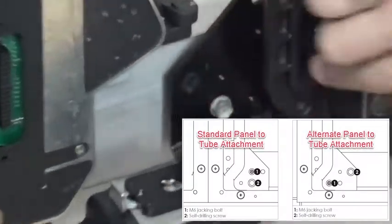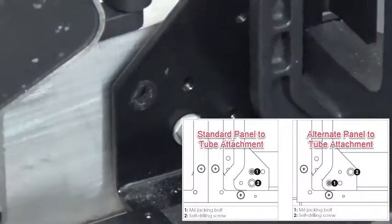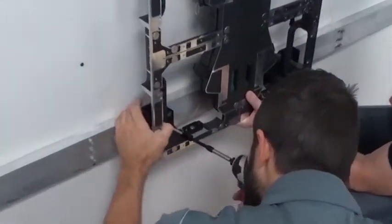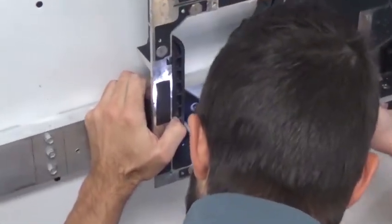If there is interference, drill the pilot holes using the alternate panel mounting locations. Align the panel and start the attachment to the tubes with self-drilling screws.